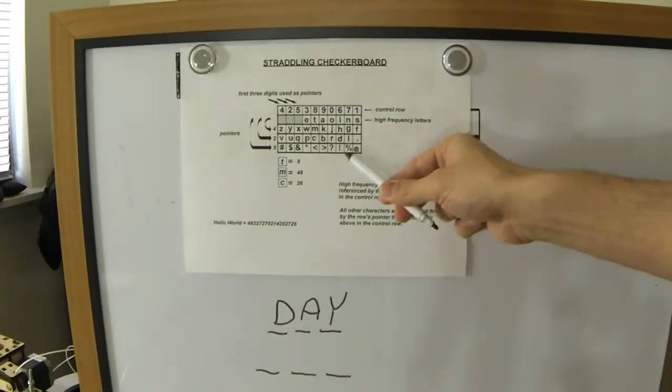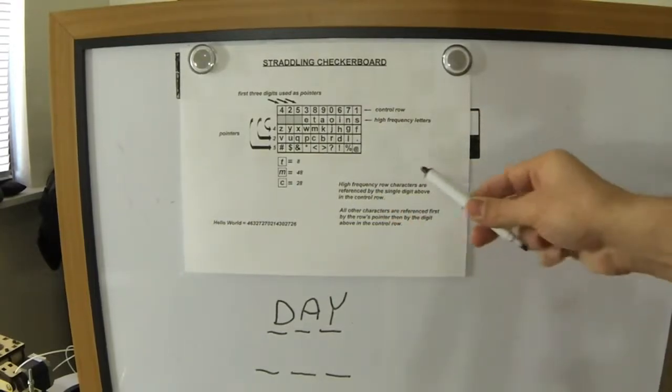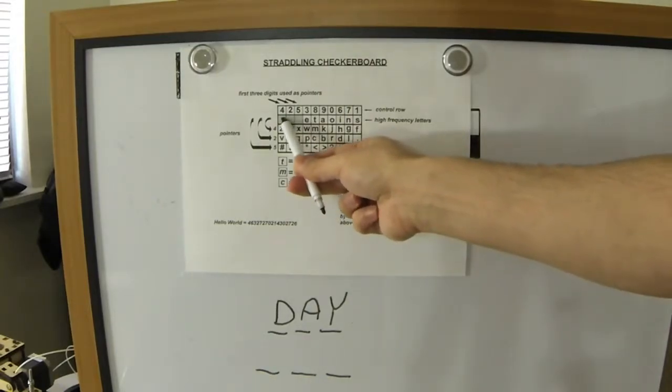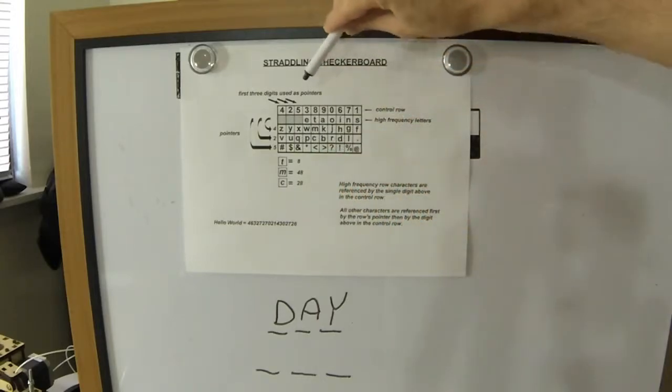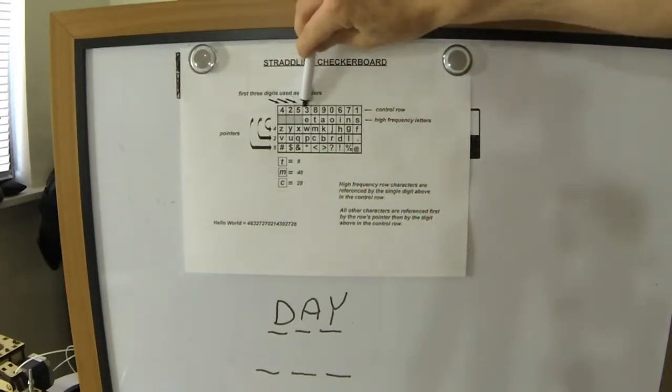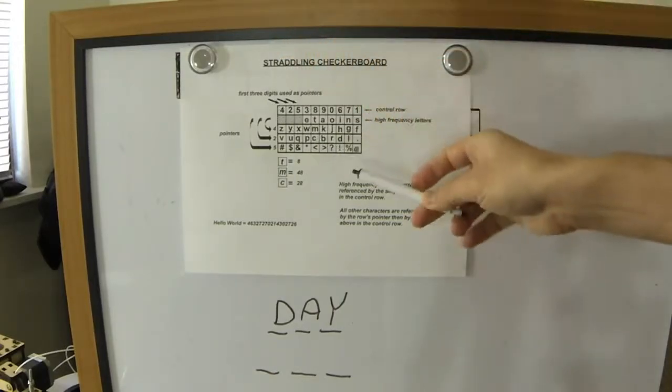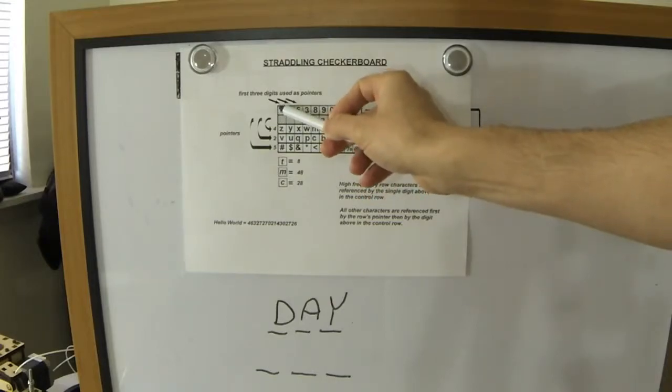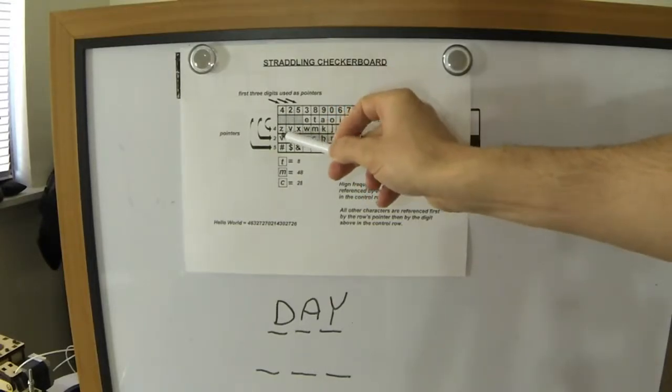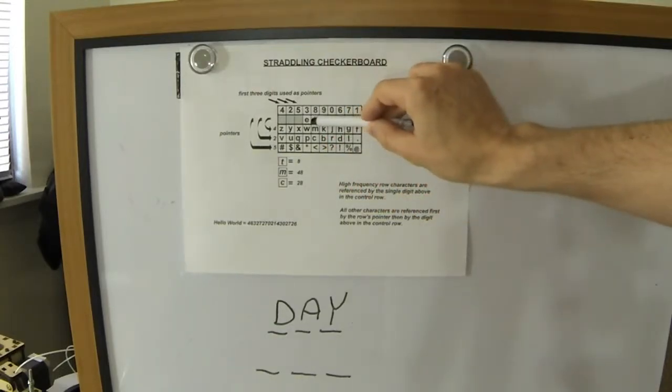So I'm just going to step through how this is actually used. If you notice, there's three blanks here. The reason for that is because the numbers on top, whatever numbers end up being on top of these three blanks, in this case 4, 2, 5, these are pointers to the rest of these rows here. So this 4 is a pointer to this row, 2 to this row, and 5 to this row.